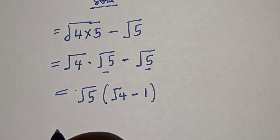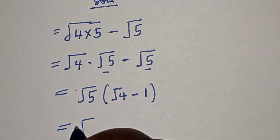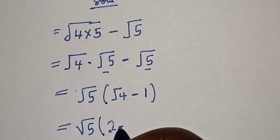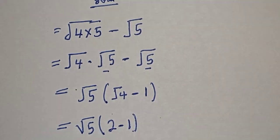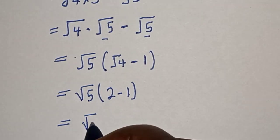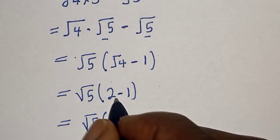Then, this is equal to square root of 5 bracket square root of 4 is 2 minus 1. And, this is equal to square root of 5 bracket 2 minus 1.